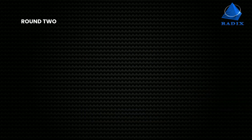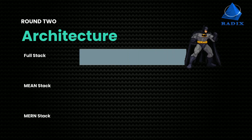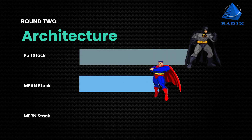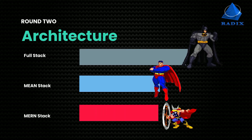2. Architecture. Fullstack supports a 3-tier web architecture. Meanstack supports upgradation and management of codes. Mernstack offers smooth UI rendering.